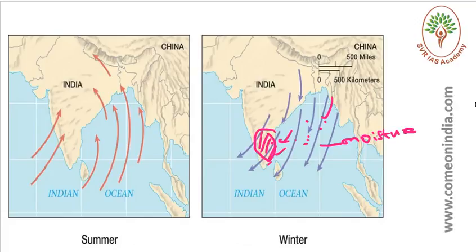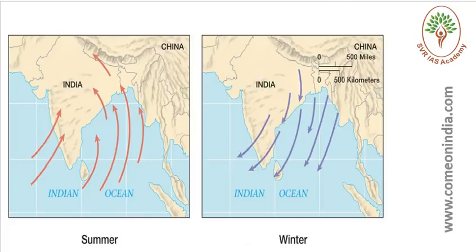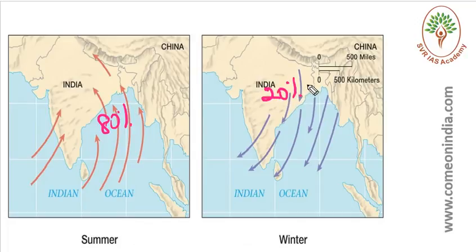That is why Tamil Nadu receives more than half of its rainfall from the Northeast monsoon. Overall, the Southwest monsoon provides 80% of India's rainfall, while the Northeast monsoon provides 20% of India's rainfall.